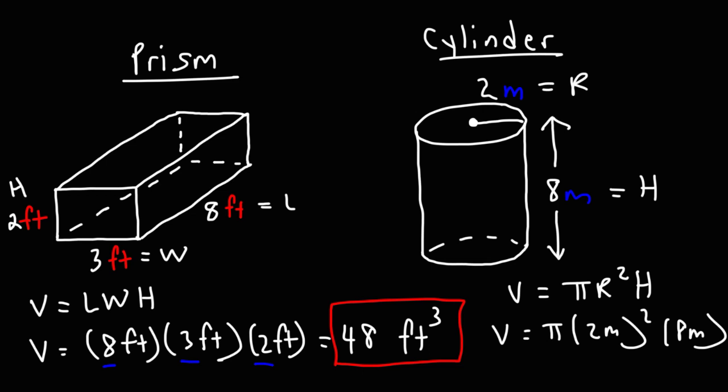2 squared is 4. 4 times 8 is 32. So the answer is 32 pi. And then here we have square meters times meters, which will give us cubic meters. So it's 32 pi cubic meters. That's the exact answer.